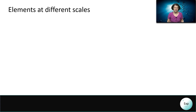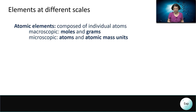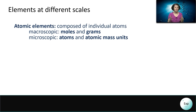When it comes to elements, they come in two forms. There are atomic elements that are made up of individual atoms. If we look at atomic elements at the macroscopic scale, then we will interact with the moles and the grams of them. But if we look at them at the microscopic scale, then we're going to look at individual atoms, and we're going to express the associated masses in atomic mass units.